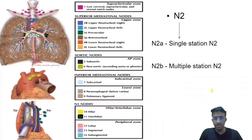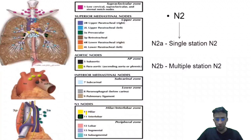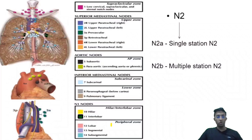Again briefly discussing the major change — N2A or N2B. N1 involves lymph node stations 10, 11, 12, 13, and 14 — that is the hilar, interlobar, lobar, segmental, and sub-segmental nodes. These are the N1 nodes.